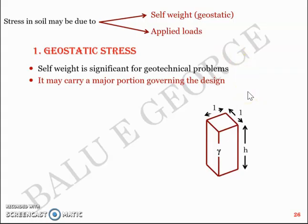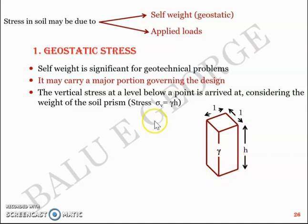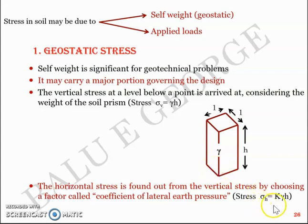The vertical stress at a level below a point is found by considering the weight of the soil prism. You have a prism of unit cross-section in plan and height h with unit weight gamma. The vertical stress at the bottom plane is sigma_v = gamma × h. The horizontal stress, which acts laterally, is found from the vertical stress using a factor called the coefficient of lateral earth pressure: sigma_h = k × sigma_v, where k is the coefficient of lateral earth pressure.